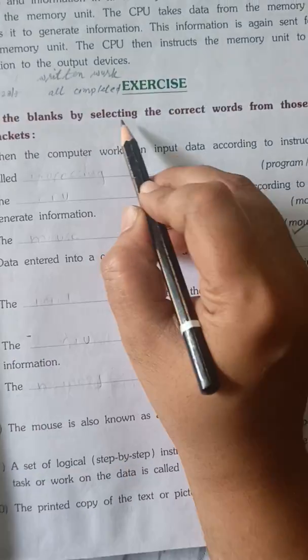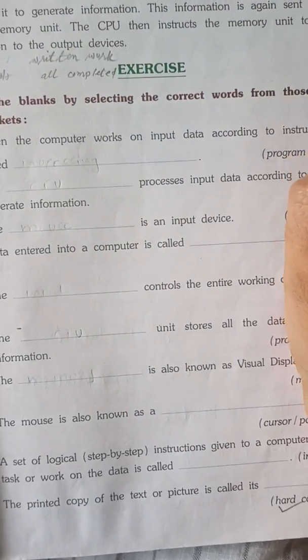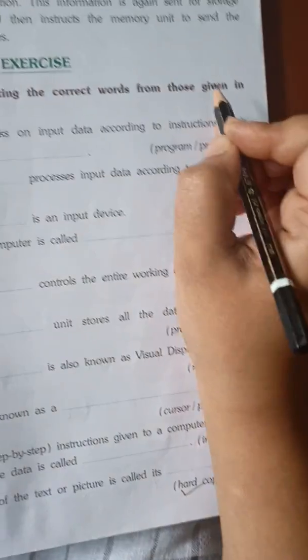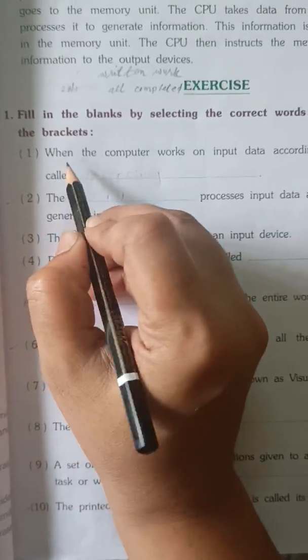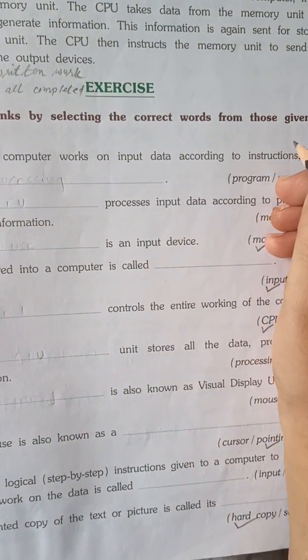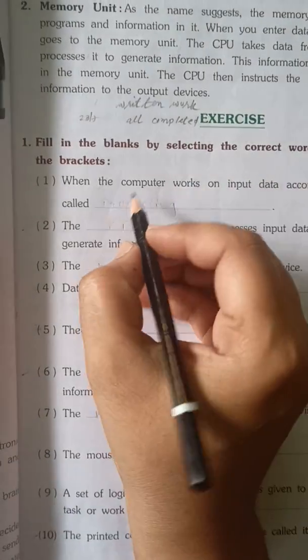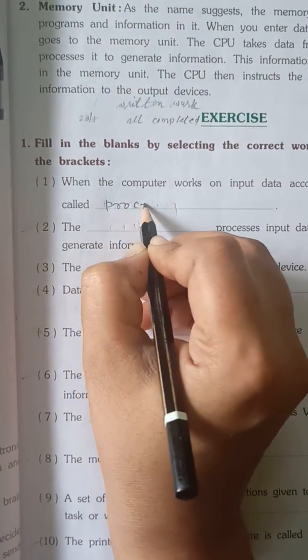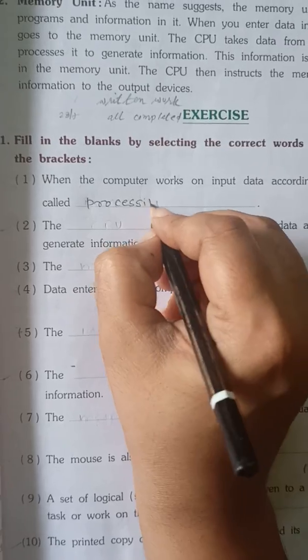Fill in the blanks by selecting the correct word from those given in the bracket. So start. When the computer works on input data according to instructions, it is called what? Processing.